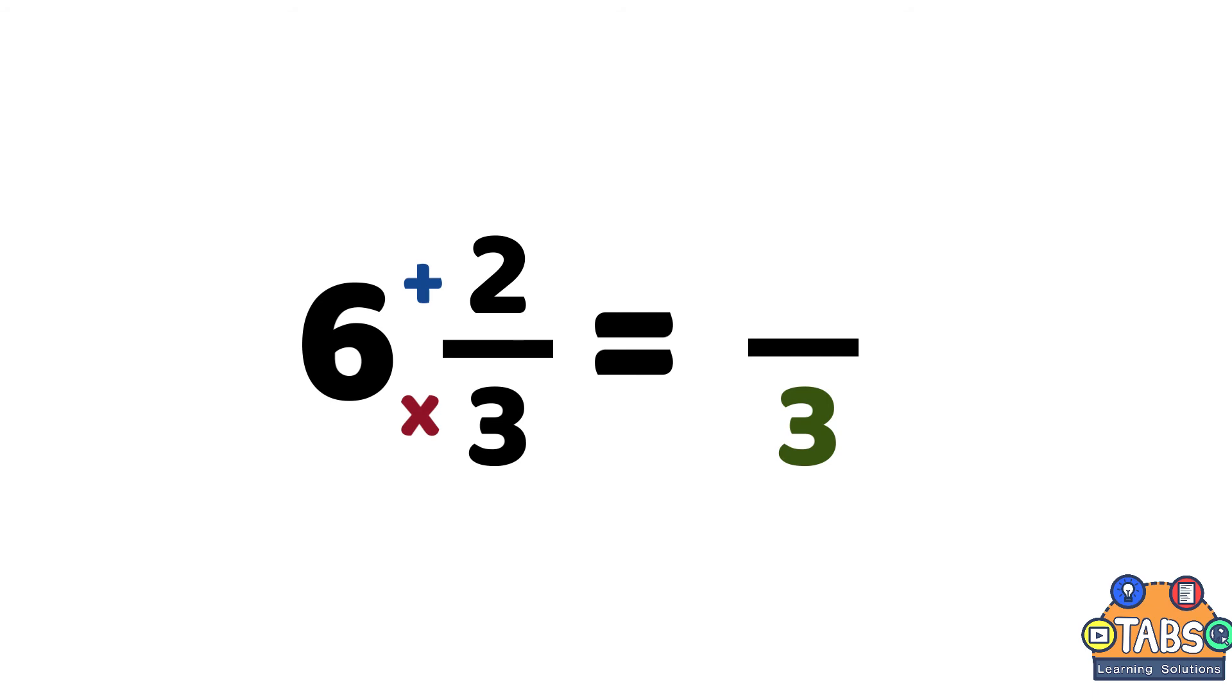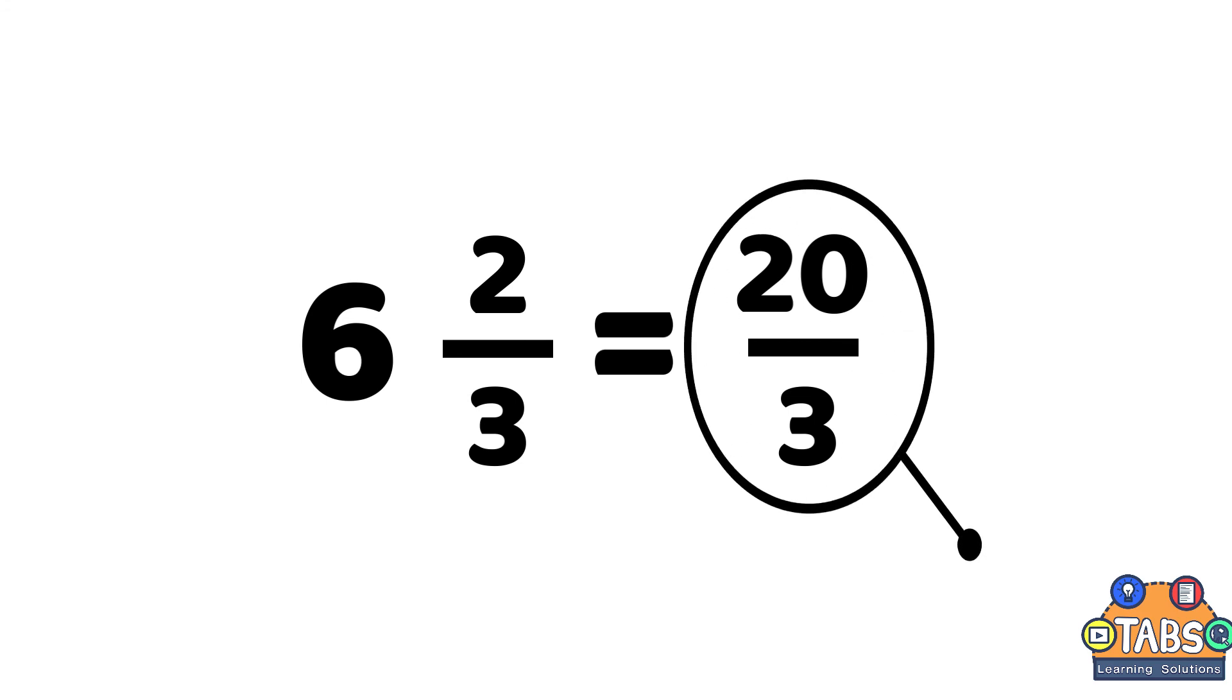Then start multiplying: 6 times 3 equals 18. Then add the numerator of 2, which equals 20. Now we have 20/3 as the improper fraction.